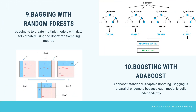The next algorithm is Bagging with Random Forest. In Bagging with Random Forest, each tree is constructed using a random sample of the records, and each split is constructed using a random sample of the predictors.